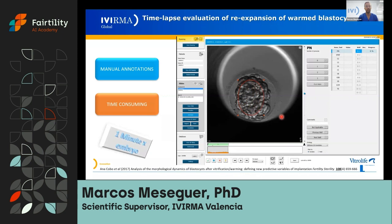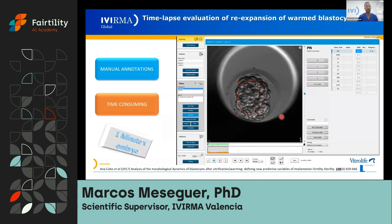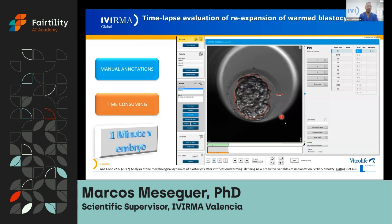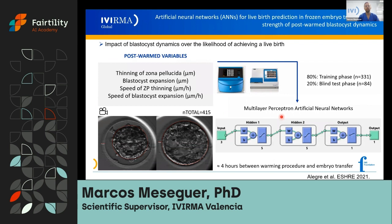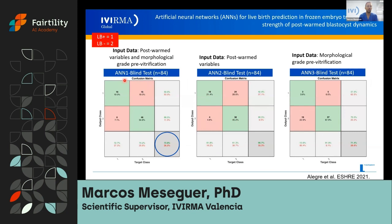Manual annotations can also be performed for embryo evaluation after warming. We published a study in Fertility and Sterility evaluating the initial area of the blastocyst and the initial thickness of the zona pellucida. We kept the embryos for four hours and then evaluated the embryo again — checking the final diameter and zona pellucida thickness after four hours prior to transfer. We used all this data for embryo quality evaluation, applying a multi-layer perceptron artificial neural network with two hidden layers for outcome prediction. That neural network achieved an accuracy of around 76% in the blind test.